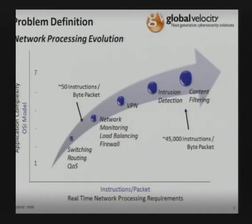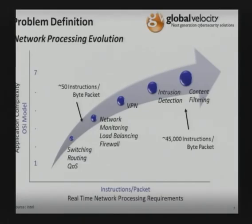At the same time as these vast speed increases, we're also seeing an exponential growth in instructions per packet in terms of processing on the network. Back when all we did was route and switch, we're talking about 50 instructions per packet. Today, as we move up through VPNs, intrusion detection, advanced firewalls, and finally into content filtering — where we're actually looking at the content in the payloads — we're up at 45,000 instructions per packet. That's a huge increase.